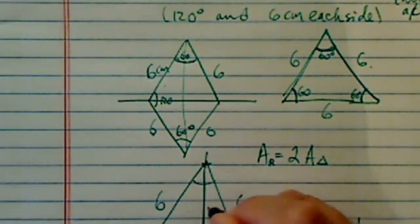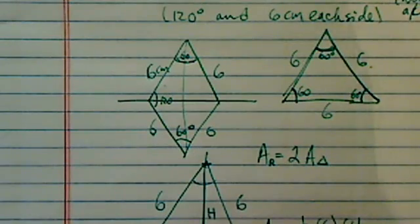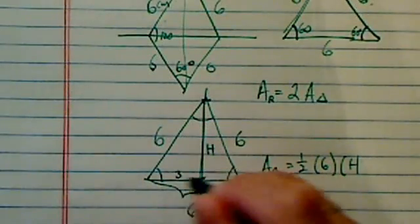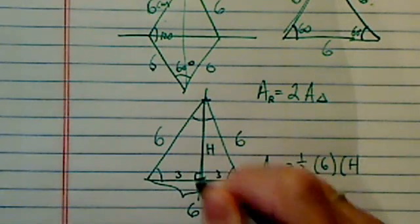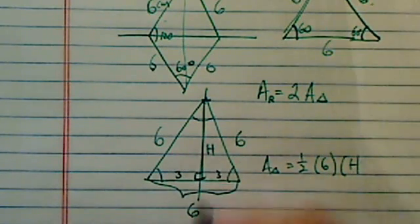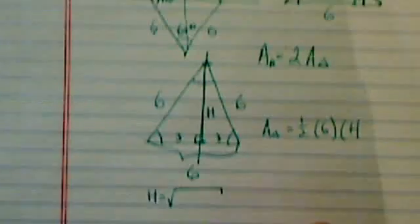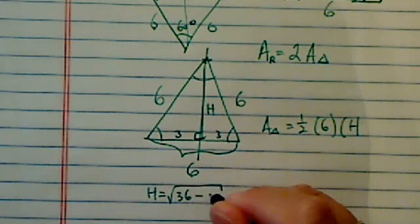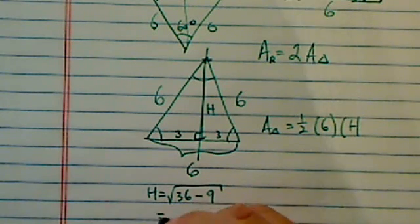Here's the height. Since the triangle is an isosceles triangle, half the height divides the base into half. So, using Pythagorean theorem, you can say height is equal to 36, which is six squared, minus three squared, which is nine. So, this is a radical of 27.